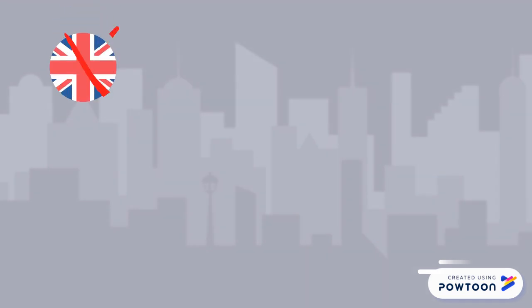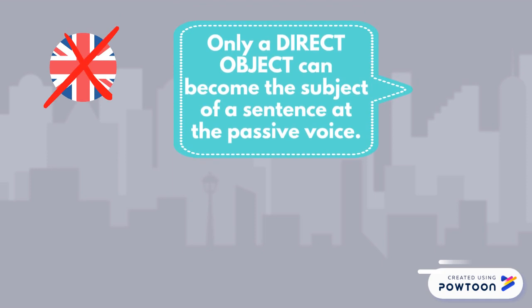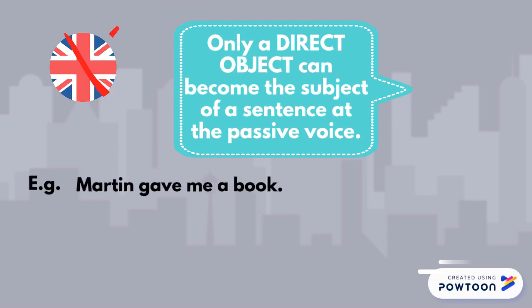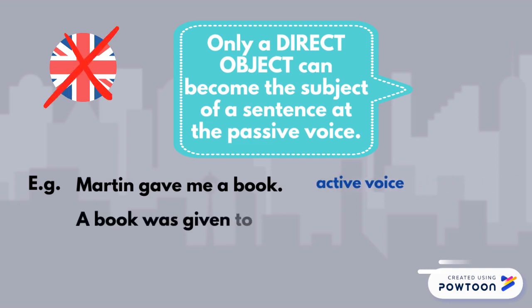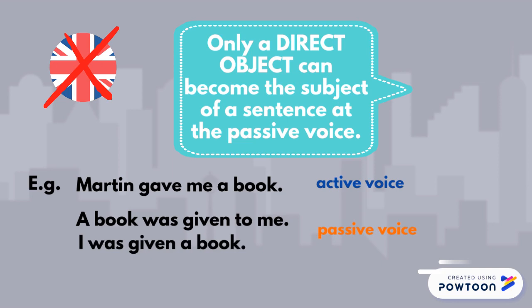An important difference with English is that in French, only a direct object can become the subject of a sentence at the passive voice. Take the English sentence: Martin gave me a book — active voice. You can say 'a book was given to me' or 'I was given a book.' Both sentences are the passive voice and both are correct.